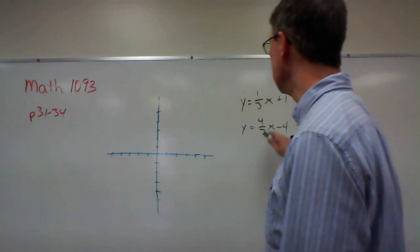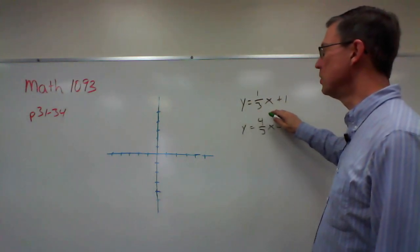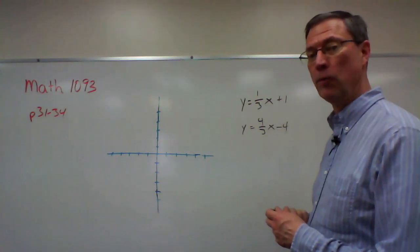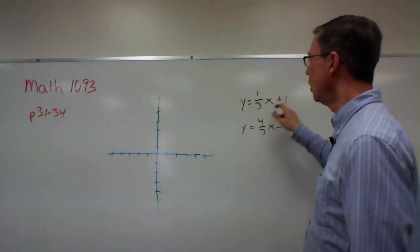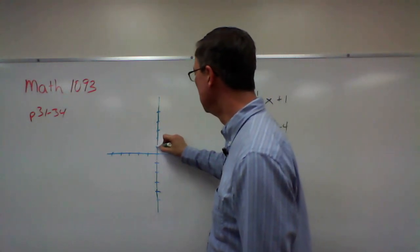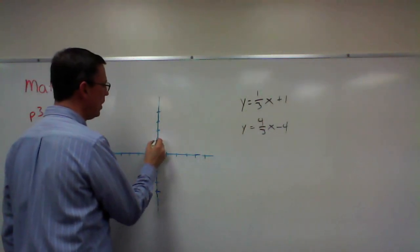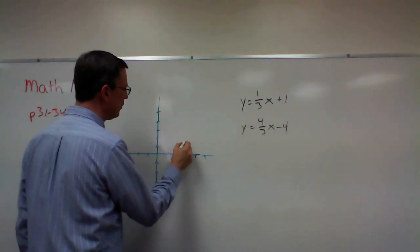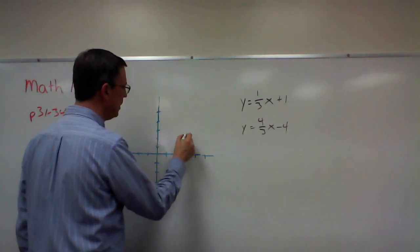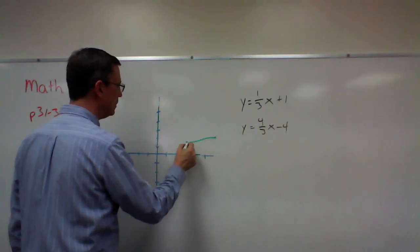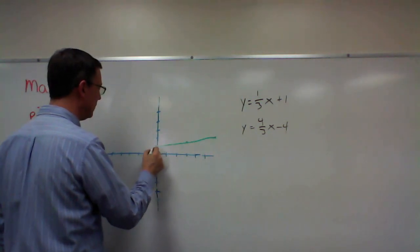Let's take this equation here first and graph it. We should be able to do this pretty quickly by this point. This one crosses at positive one and then the slope is one third, so we go up one over three, up one over three. So this line is coming like this.